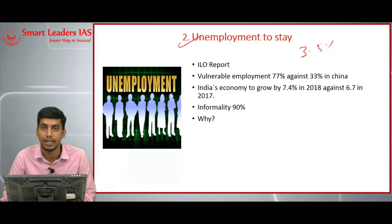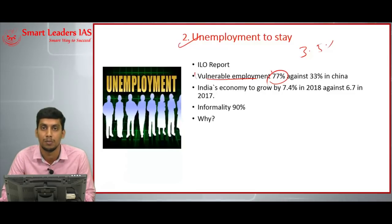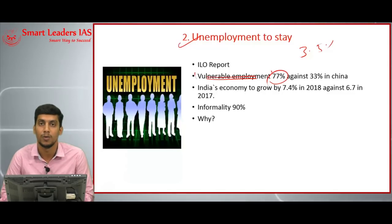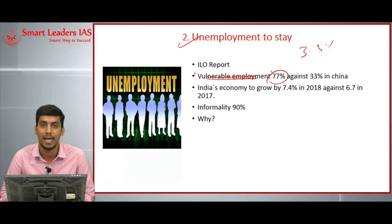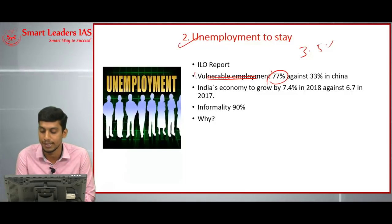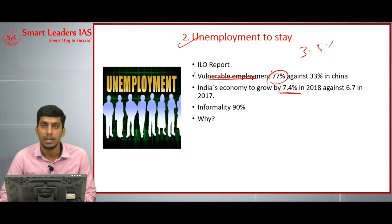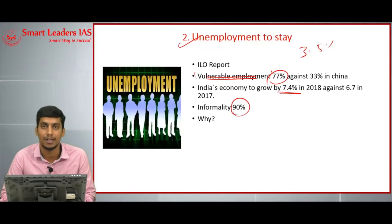The worrying fact is that 77% of India's employment comes under the vulnerable employment category. Those who are self-employed and those working in family establishments are considered to be vulnerably employed, because they lack decent working conditions and social security. The report also says India's growth rate is going to be 7.4% in 2018, against 6.7% in 2017.